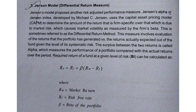Rm is the market return and Rf is the risk-free rate with the beta value. Now there is a problem with the details of 3 funds: A, B, and C, given below. The funds have return and beta values. The market index is 16.1 and the risk-free rate is 10.1.